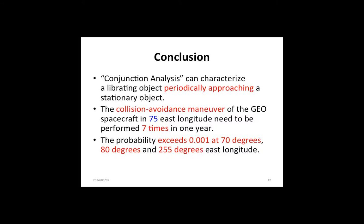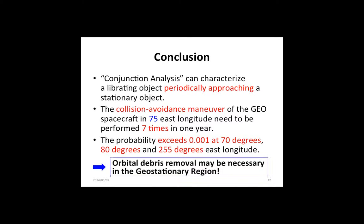In conclusion, I showed that conjunction analysis can characterize a vibrating object periodically approaching a stationary object. Secondly, I reached the conclusion that collision avoidance maneuvers for geosynchronous spacecraft at 75 degrees east longitude need to be performed seven times in one year. Finally, I calculated that the probability exceeds 10 to the minus 3 at 70 degrees, 80 degrees, and 255 degrees east longitude. Therefore, in my opinion, orbital debris removal may be necessary in the geostationary region.